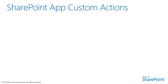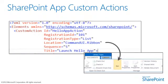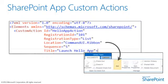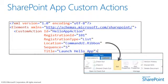Another interesting way to surface your app functionality is to create a custom action. A custom action defines an extension to the user interface, such as a button on a toolbar or a link on a context menu. It can be used to surface your app within the host web, making it feel like part of SharePoint. Command extensions can define additional capabilities such as adding ribbon buttons or controls used to trigger apps.